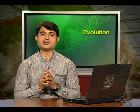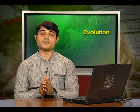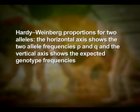The sum of all genotype frequencies is the binomial expansion of the square of the sum of p and q, and such a sum, as it represents the total of all possibilities, must equal 1. Therefore, (p + q)² = p² + 2pq + q² = 1. A solution of this equation is q = 1 − p. In the Hardy-Weinberg proportions graph for two alleles, the horizontal axis shows the two allele frequencies p and q, and the vertical axis shows the expected genotype frequencies. Each line shows one of the three possible genotypes.